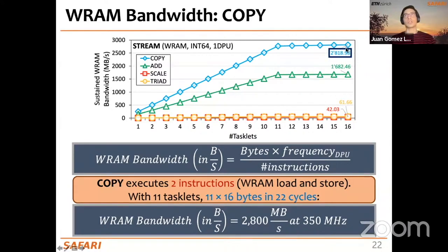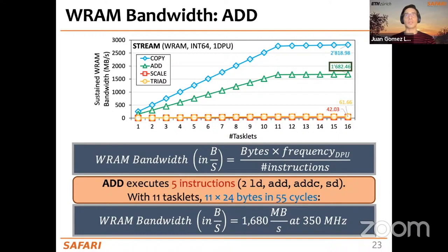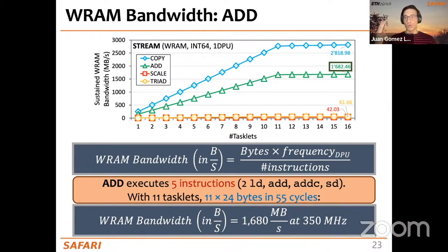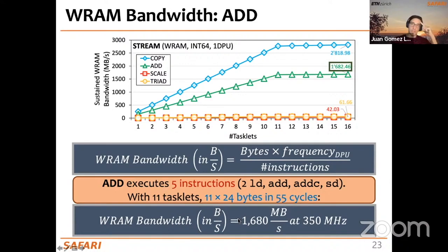For add, we use the same expression. We need five instructions: two loads, one ADD, one ADD-with-carry (for 64-bit operands), and one store. With two input arrays and one output, we read two 8-byte elements and write one — 24 bytes total. With 11 tasklets and 5 instructions, we move 11×24 bytes in 55 cycles, giving an estimate of 1680 MB/s, which also matches closely. Similar calculations apply for scale and triad.